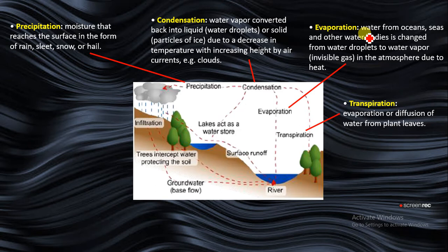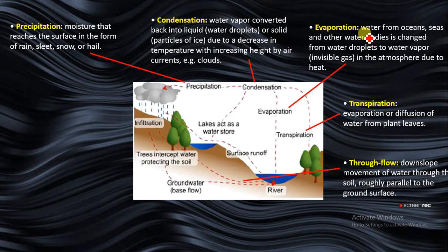You have through-flow and groundwater flow. Through-flow has to do with downslope movement of water through the soil, roughly parallel to the ground surface.